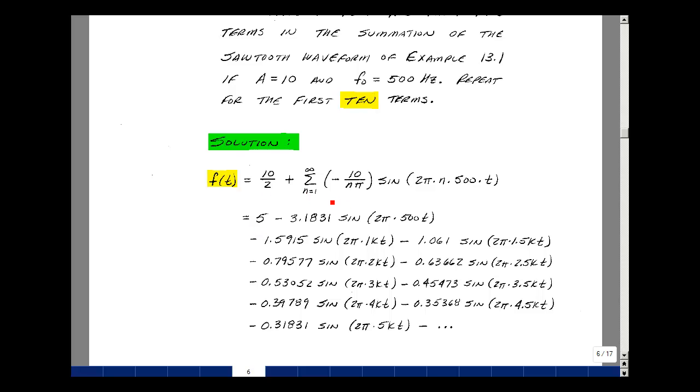What's shown below here is the calculations for n is equal to 1 to 10. I have 5 here, and then this first term turns out to be minus 3.1831 times the sine of 2 pi 500 t. The next term for n equals 2, the constant is equal to 1.5915 times the sine of 2 pi times 1 kilohertz times t, and then 1 and a half kilohertz, 2 kilohertz, 2 and a half, and so on, and then up to 5 kilohertz.